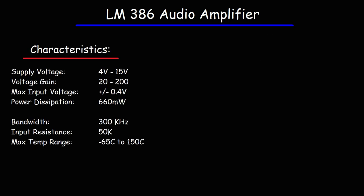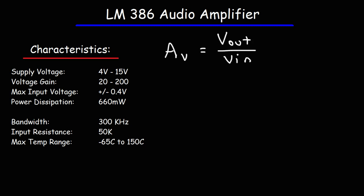Here are some other characteristics of the LM386N-1 audio amplifier. The voltage gain, represented by AV, is typically between 20 and 200. The voltage gain is the ratio of the output voltage to the input voltage. The max input voltage that should be applied to this device is plus or minus 0.4 volts. The bandwidth is 300 kilohertz — that's the frequency range over which the op-amp will function. The input resistance is 50 kilo ohms. The power dissipation is 660 milliwatts, or 0.6 watts.